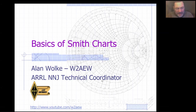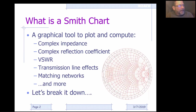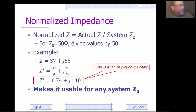Here are his slides — I have his permission to go through these, and he presented this as technical coordinator to ARRL. Down here in the bottom is the Smith chart if you haven't seen it before. As mentioned, it's a graphical tool to plot and compute complex impedances and transmission line effects — it lets you do matching networks and more.